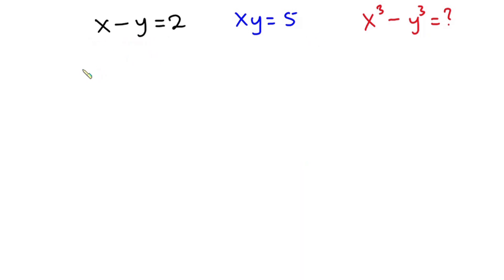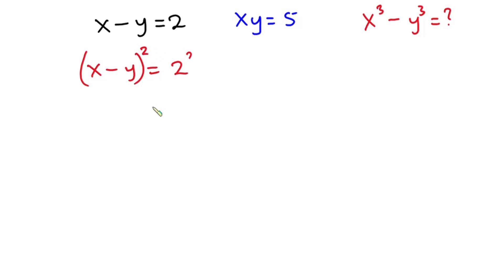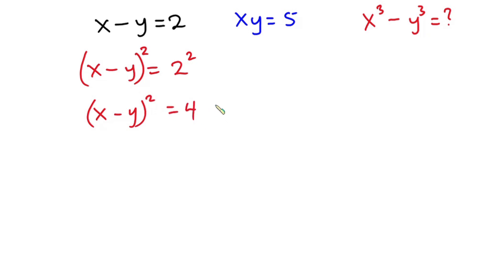From this equation, we have x minus y is equal to 2. Now let's go ahead and raise each side of this equation to the 2nd power. So we have x minus y all squared is equal to 4. I'm going to call this equation 1.